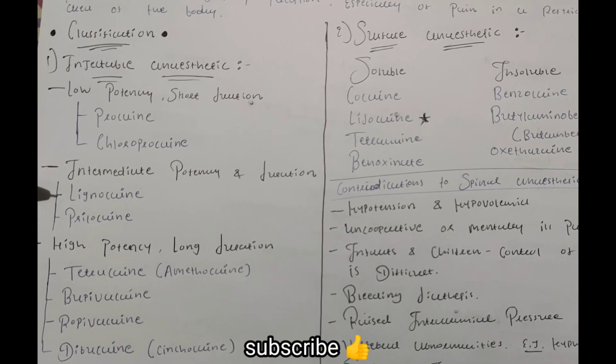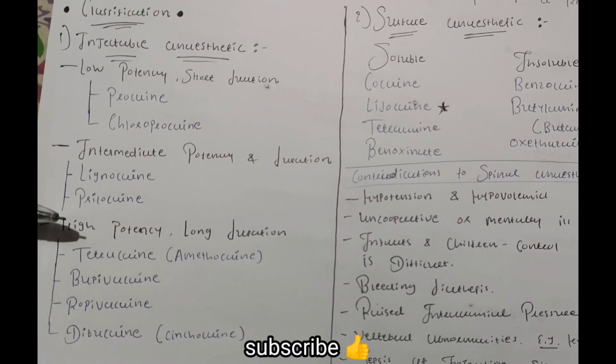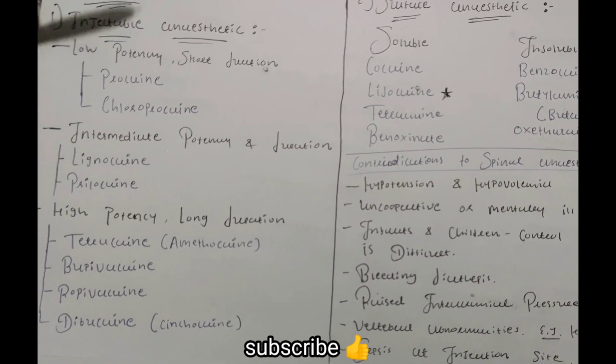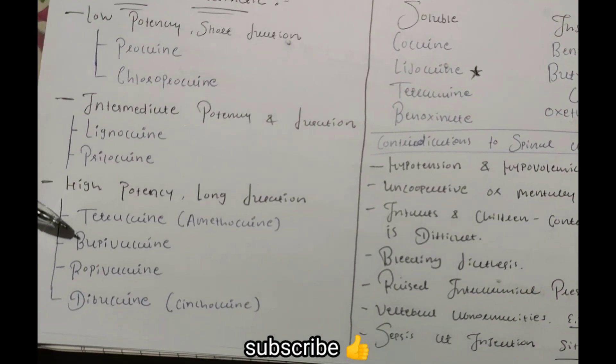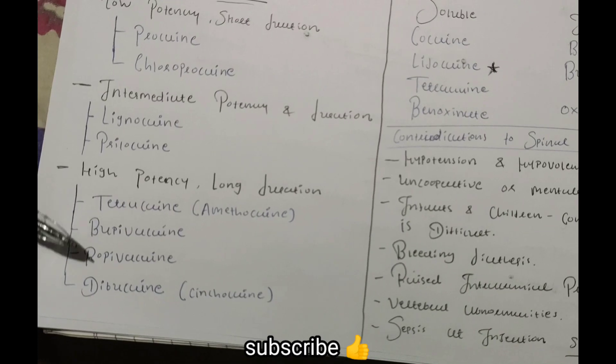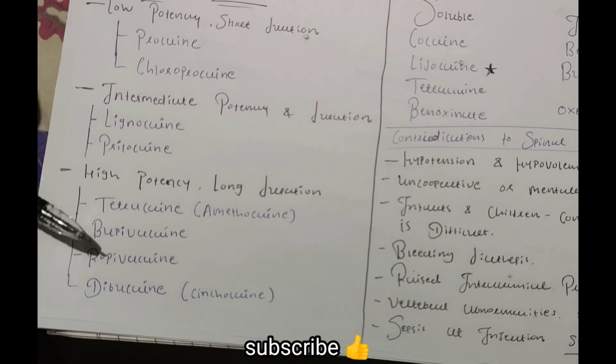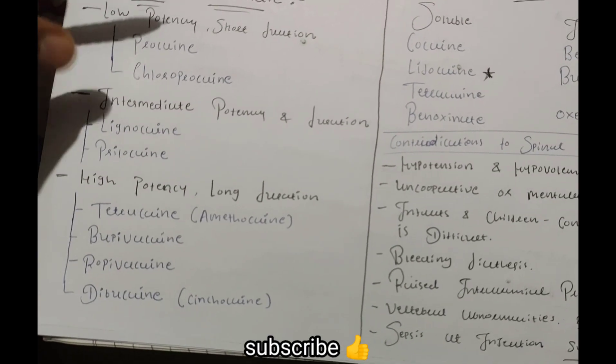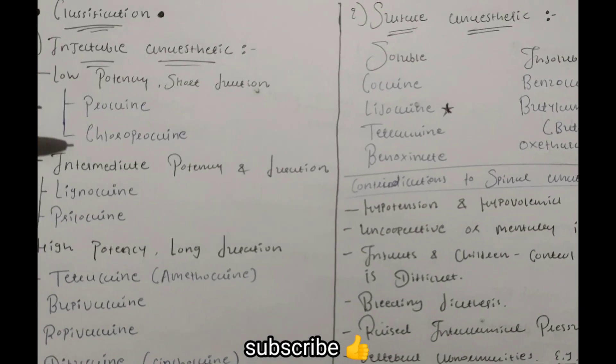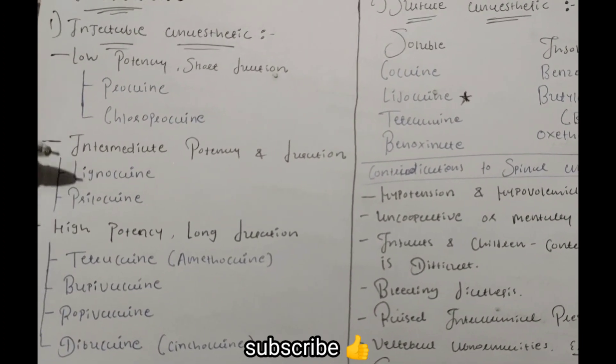The intermediate potency includes lidocaine, mepivacaine, and prilocaine. Then high potency long duration includes tetracaine, bupivacaine, levobupivacaine, and ropivacaine. This is what you need to keep in mind.